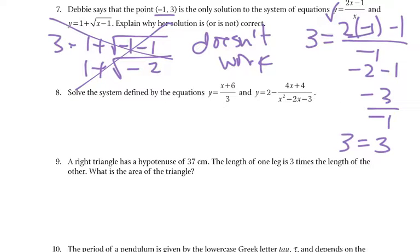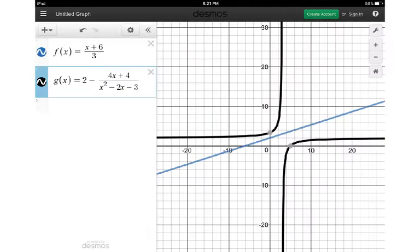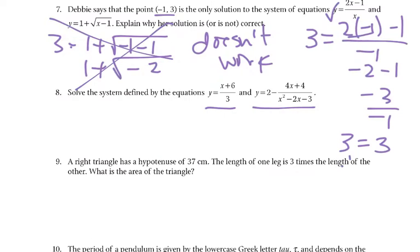8 says solve the system defined by these two equations. So once again, I'm going to jump to Desmos and do that one. So I graphed it and we noticed a few things. First of all, this rational has those asymptotes, right? And it jumps. So the way this graph is set up, it actually will never touch. So we would say that there is no solution. Because they never intersect. If they never intersect, they never have a solution.